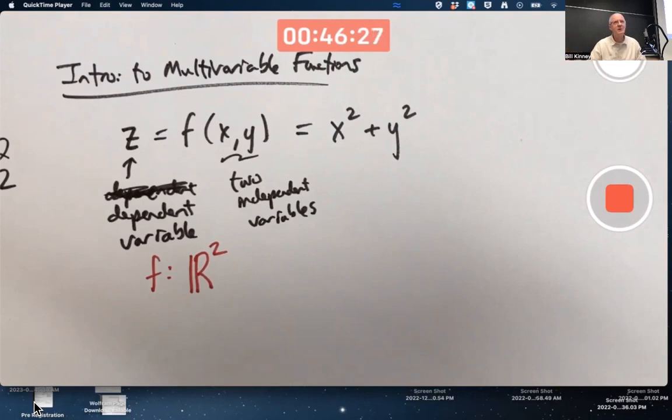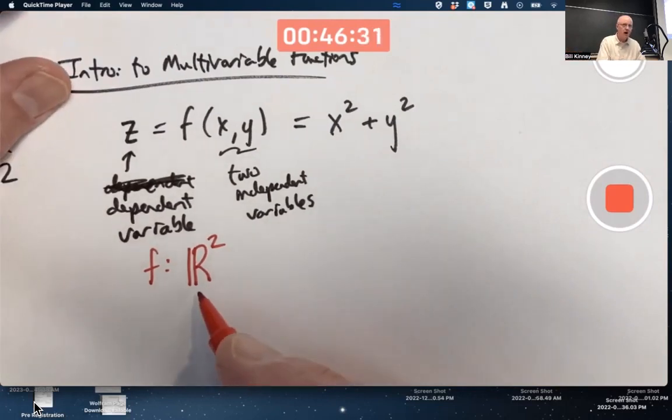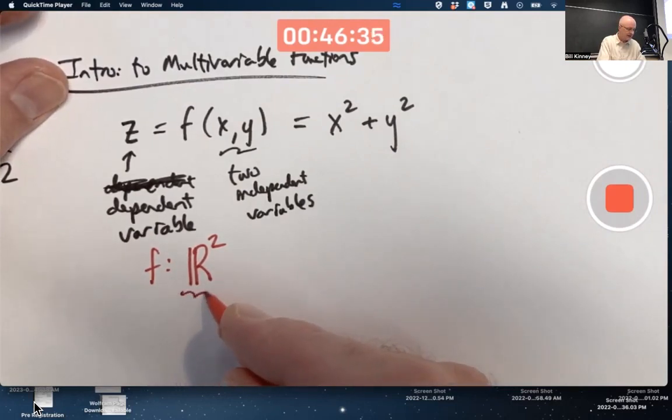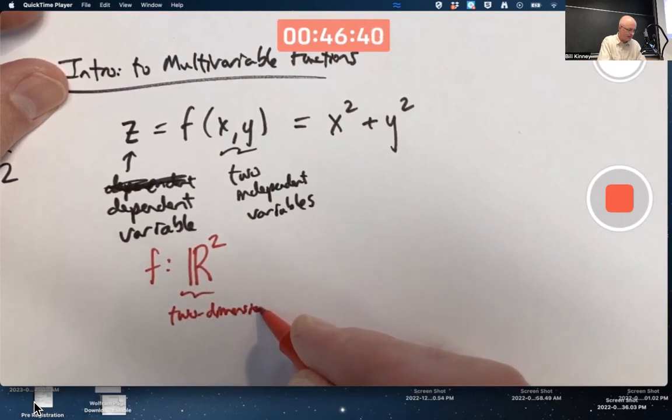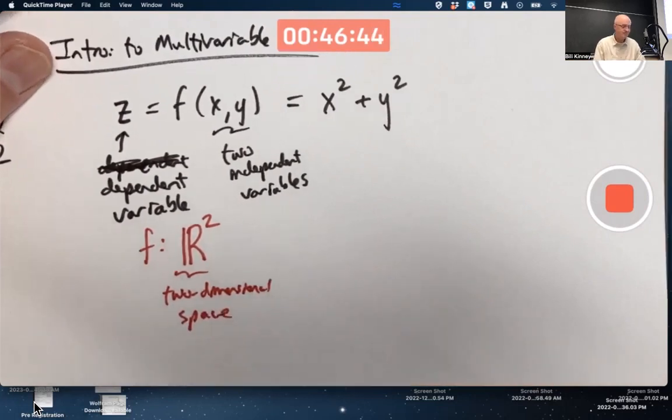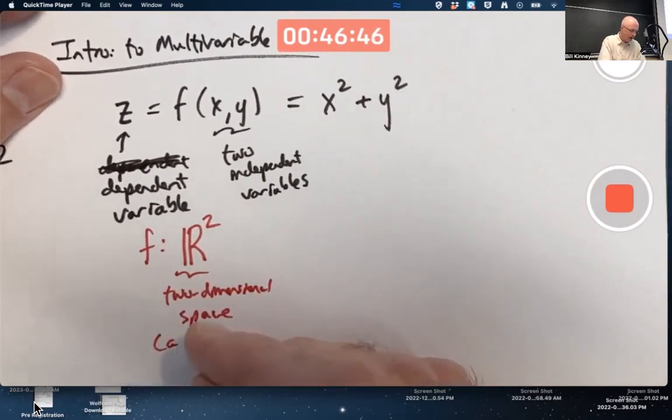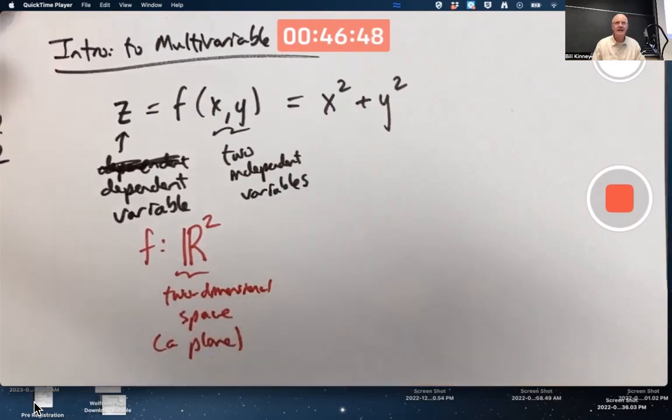It's also just what mathematicians do. R2, with this funny-looking R, effectively represents two-dimensional space. In other words, a plane. What plane? Well, effectively, any plane you want.